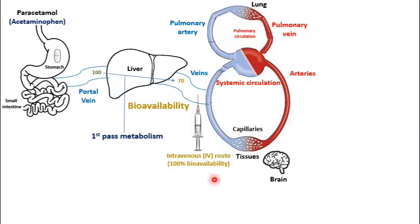The IV route bypasses first-pass metabolism. In fact, not only the IV route — any injection route bypasses first-pass metabolism as well. When giving a drug under the tongue, or sublingually, this also bypasses first-pass metabolism, because the veins that carry blood from the tongue go directly into the heart without passing through first-pass metabolism.